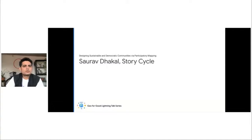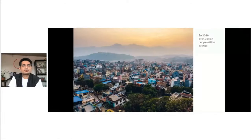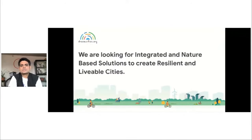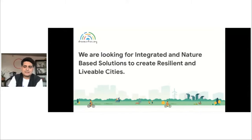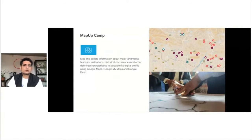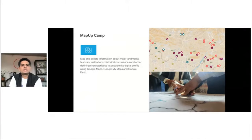Hello, everyone. My name is Saurabh. I work for StoryCycle. I'm based in Nepal right now, in the capital city of Kathmandu. As you all know, the world is urbanizing rapidly. By 2050, over 6 billion people will live in cities, and city people will increasingly feel the effects of climate and its impact. Cities around the world are looking for integrated and nature-based solutions to create resilient and livable cities after this COVID pandemic. We came up with the idea of designing a sustainable and democratic city by using community mapping and storytelling tools, where we work with young people in different stages. We use Google Map, Google My Maps, and recently we also started using Google Earth.